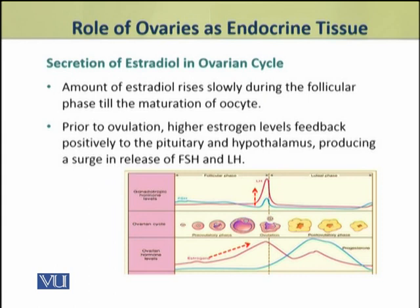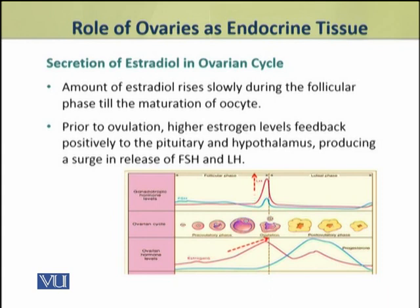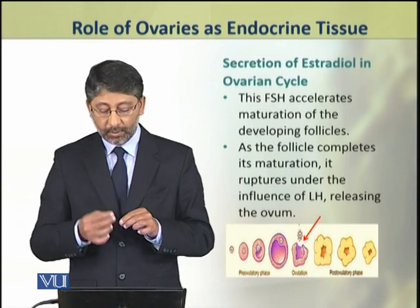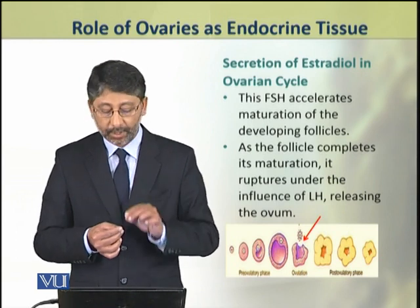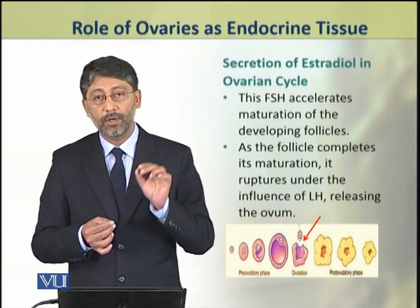Dear students, the amount of estradiol rises slowly during the follicular phase until the maturation of the oocyte. Just prior to ovulation, estrogen levels are at their peak. These estrogens feed back positively to the pituitary and hypothalamus, which results in producing a surge in the rise of both FSH and LH. This rise in FSH and LH accelerates the maturation and development of follicles.